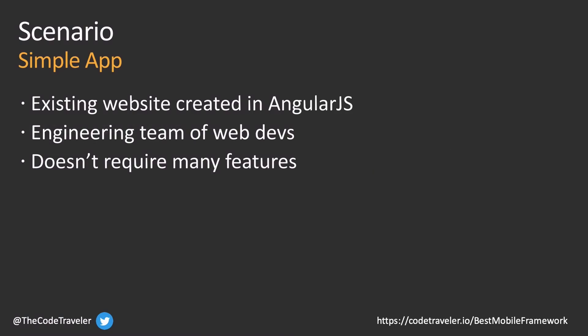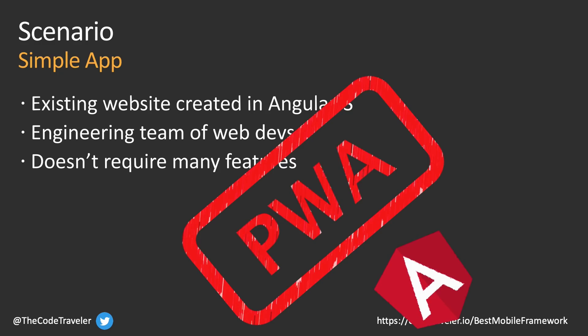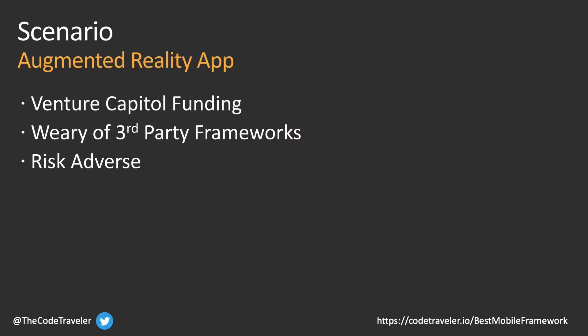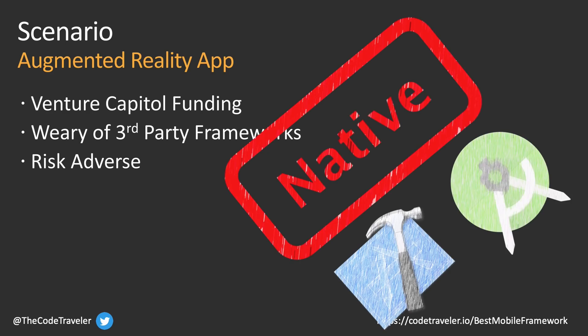Let's look at a couple of scenarios to help choose which approach is best. In the first scenario, we're creating a simple mobile app. Our company has an existing website in AngularJS, an engineering team of web developers, and the app doesn't require a lot of features. Here it makes a lot of sense to create a PWA using AngularJS. In the second scenario, we want to create an augmented reality app. We have venture capital funding and a leadership team wary of third-party frameworks. In this case, it makes sense to use the native toolkits, with one team on the iOS app and another on Android, to avoid the risk of third-party dependencies.